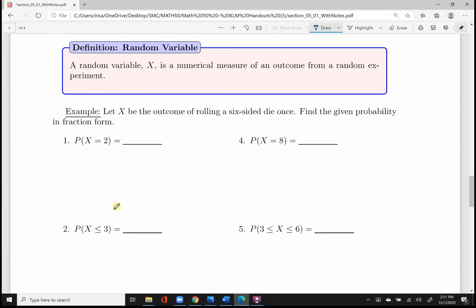Now we're going to have a little bit of different notation, but nothing too wildly crazy. We just want to now define these probabilities in terms of a random variable. So a random variable, X, is a numerical measure of an outcome from a random experiment. So let X be the outcome of rolling a six-sided die once. Find the given probability in fraction form. So now we're saying that we're going to find the probability of X equaling two. Now that's actually no different than P of two. It's just we have a little bit of a different notation going on here. So that'll be how many times can you roll a two out of the six possible outcomes of a die? Well, that'll be one out of six times.